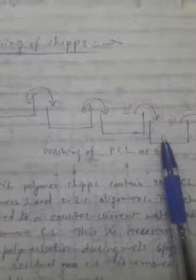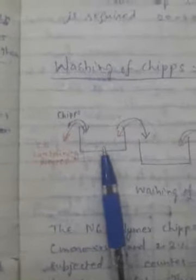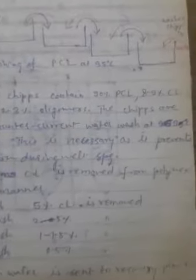Fresh water is filled in the first tank and transferred to the next tank where a small amount of caprolactam is removed. Maximum caprolactam is removed in the first tank. The nylon 6 polymer chips contain approximately 90% polymer, 8 to 9% unconverted caprolactam, and 2 to 3% oligomers.